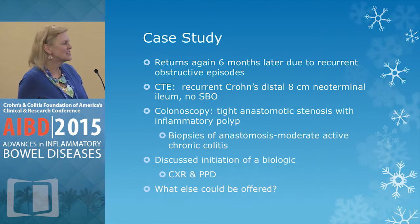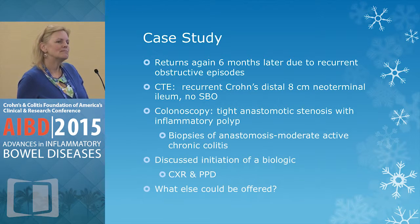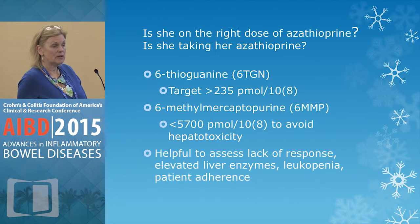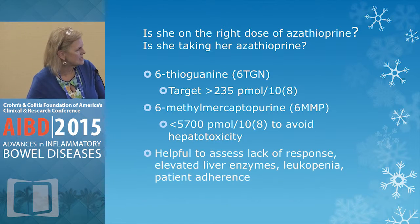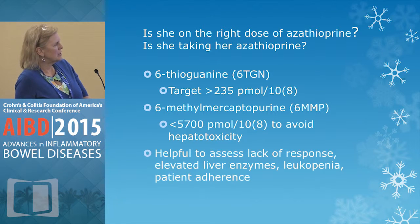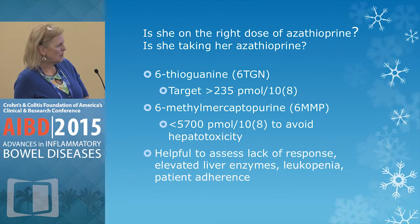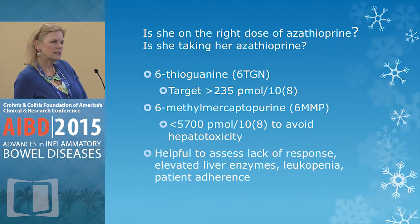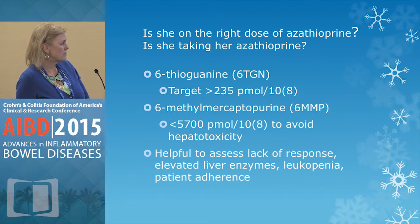Hepatitis B status — absolutely. Back in the day we weren't routinely doing that, but Hep B screening is important. A trial of budesonide might also have been appropriate. Additionally, we should ask: is she on the right dose of azathioprine? She had gained some weight since her last visit, so there may have been room for improvement. We could check her therapeutic drug levels — typically you want thioguanine nucleotides above 235, and 6-MMP below 5700. This helps assess inadequate response, loss of response, or medication adherence.